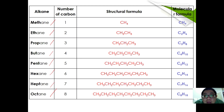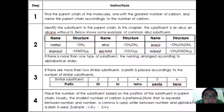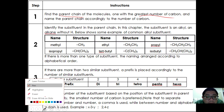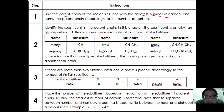Now let's learn how to name an alkane. There are four steps. The first step is to find the parent chain — the chain with the greatest number of carbons — and name it according to the number of carbons. The second step is to identify the substituents outside the parent chain.